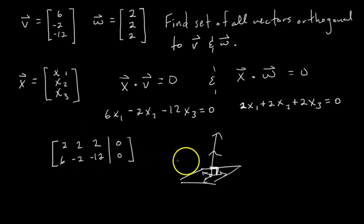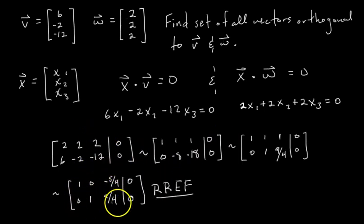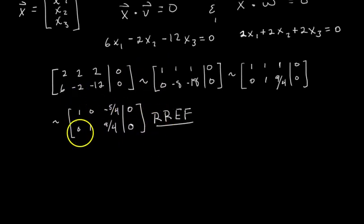Let's go ahead and row reduce this matrix and find our solution to the system of equations. Now we've made it all the way down to reduced row echelon form.